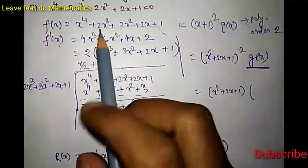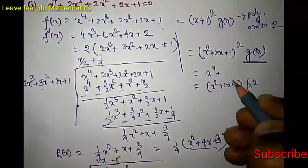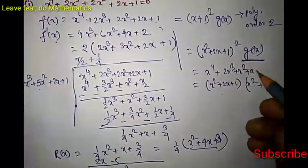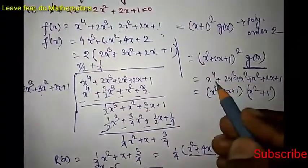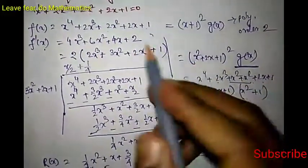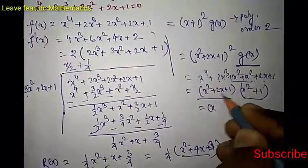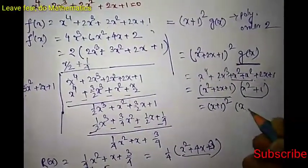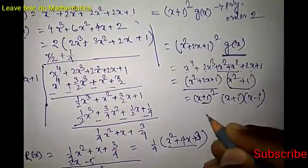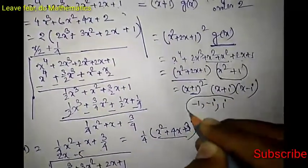Multiplying (x² + 2x + 1) by x² gives x⁴ + 2x³ + x². Then multiplying by 1 gives x² + 2x + 1. Adding these: x⁴ + 2x³ + 2x² + 2x + 1, which is exactly f(x). So g(x) = x² + 1. Now x² + 2x + 1 = (x + 1)², and x² + 1 = (x + i)(x − i).